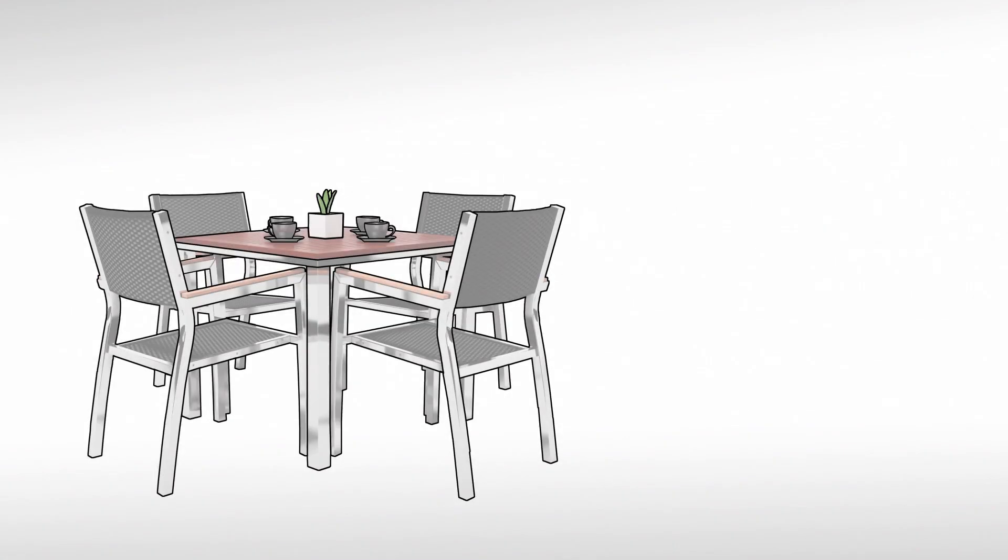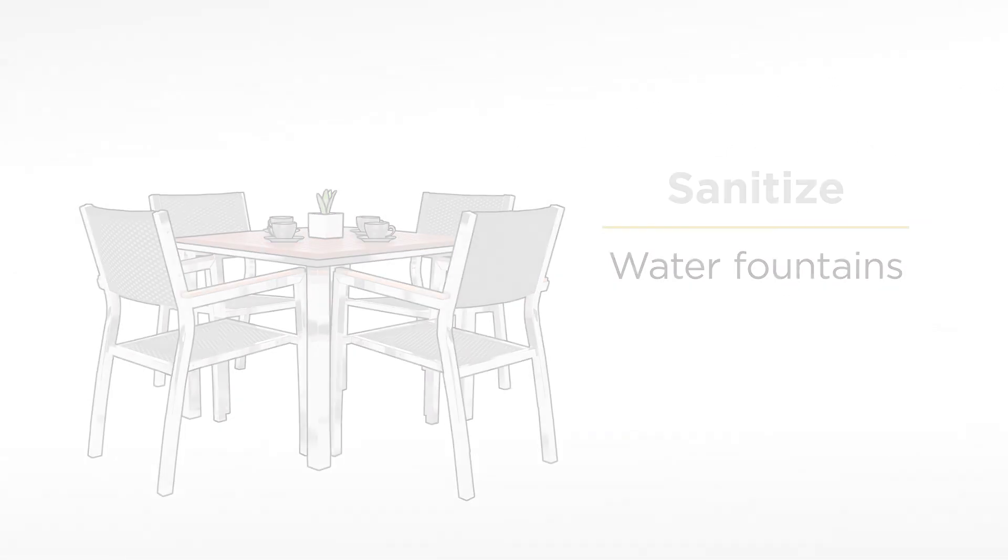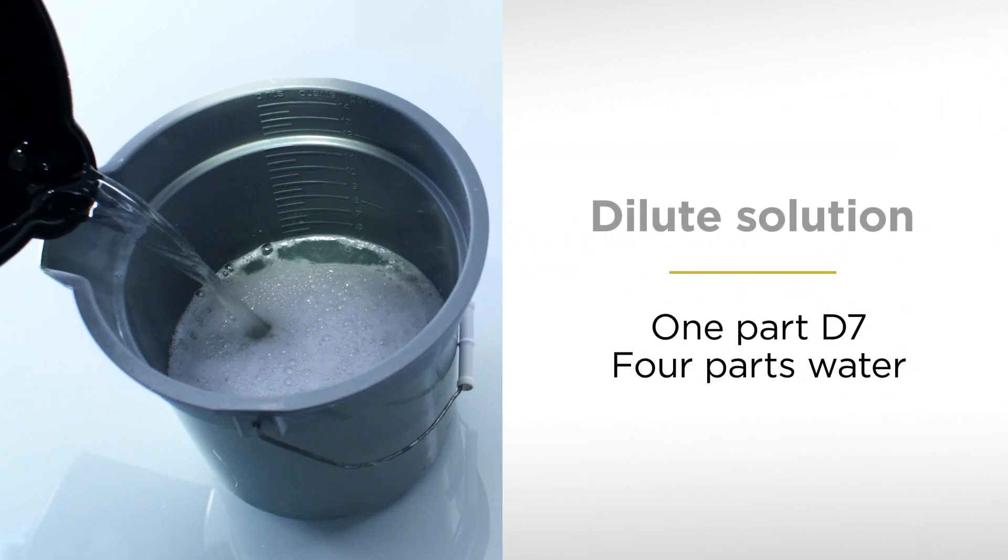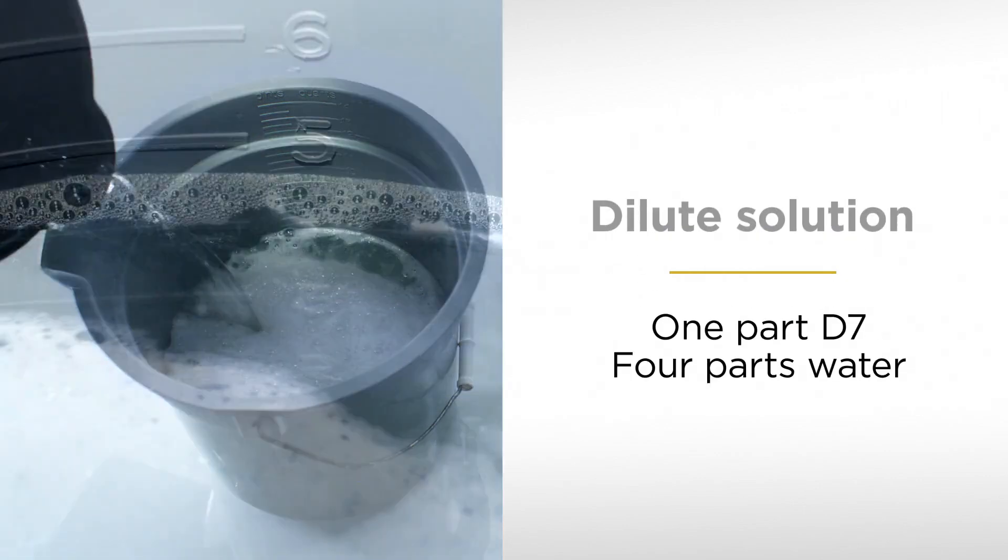To use D7 to sanitize food service areas, cafes, lunch rooms, and water fountains, dilute the solution by mixing one part D7 to four parts water before use.